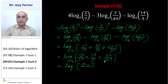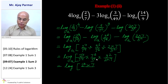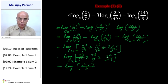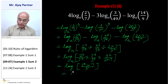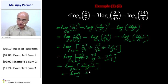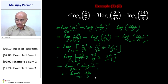After simplification, we are left with log of 2-cube multiplied by 7 upon 3, to the base A. That gives us the final answer: log 56 upon 3 to the base A.